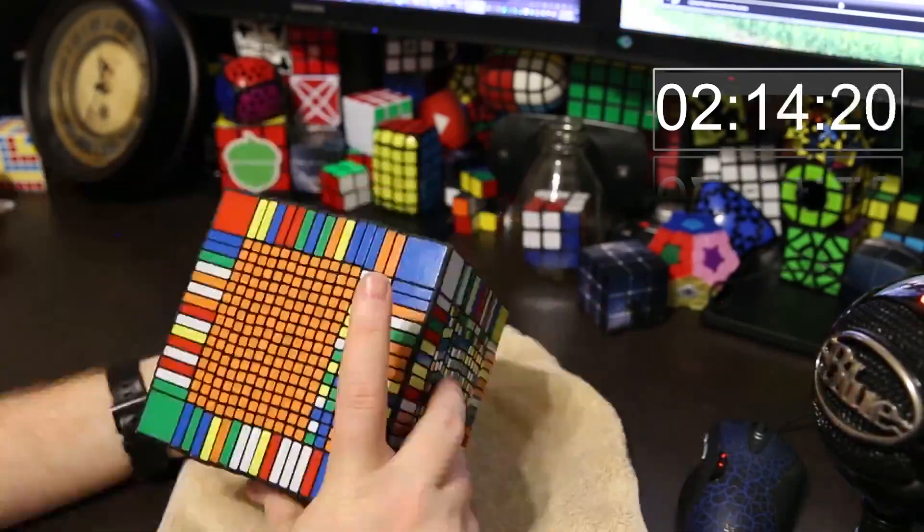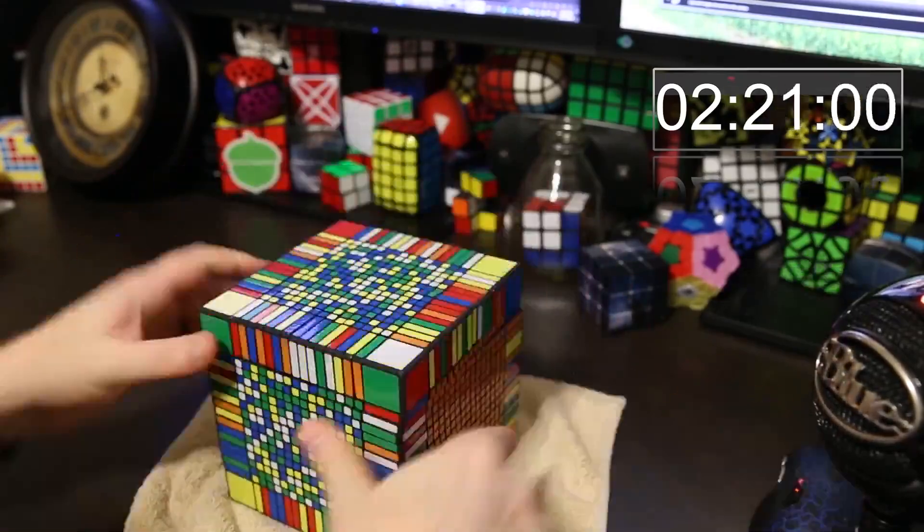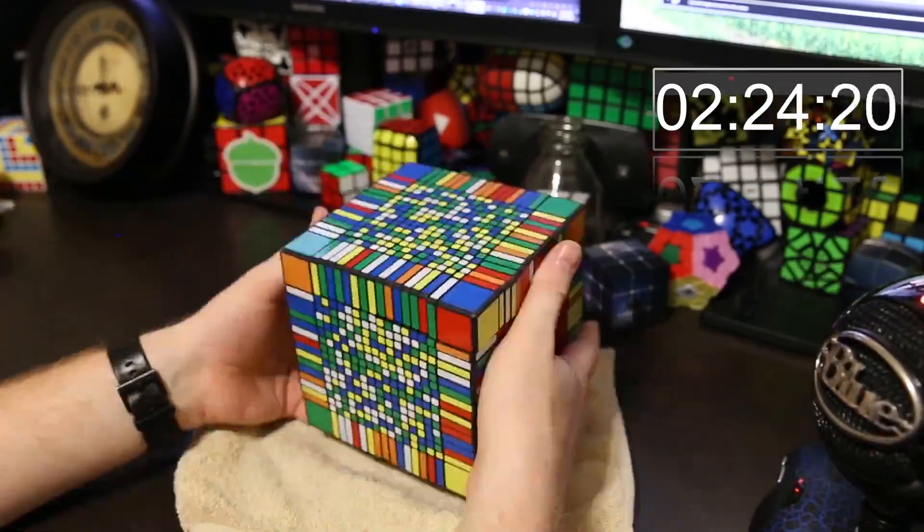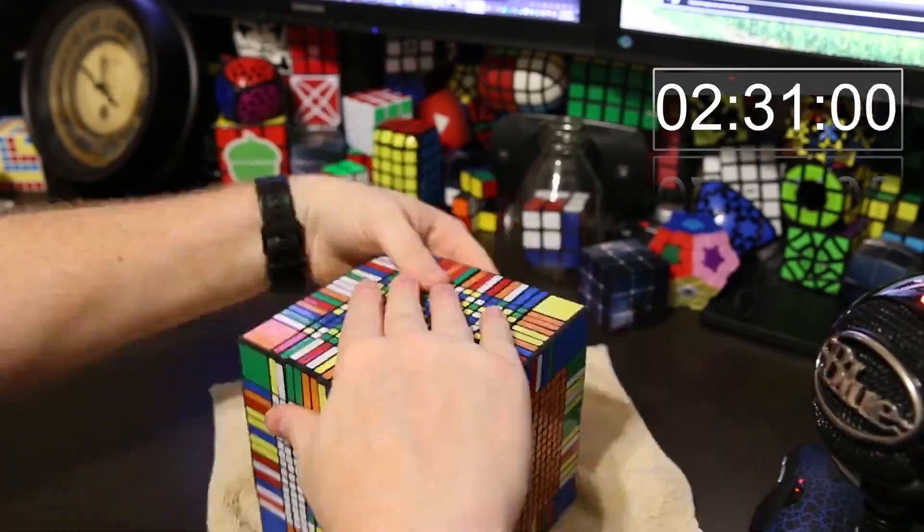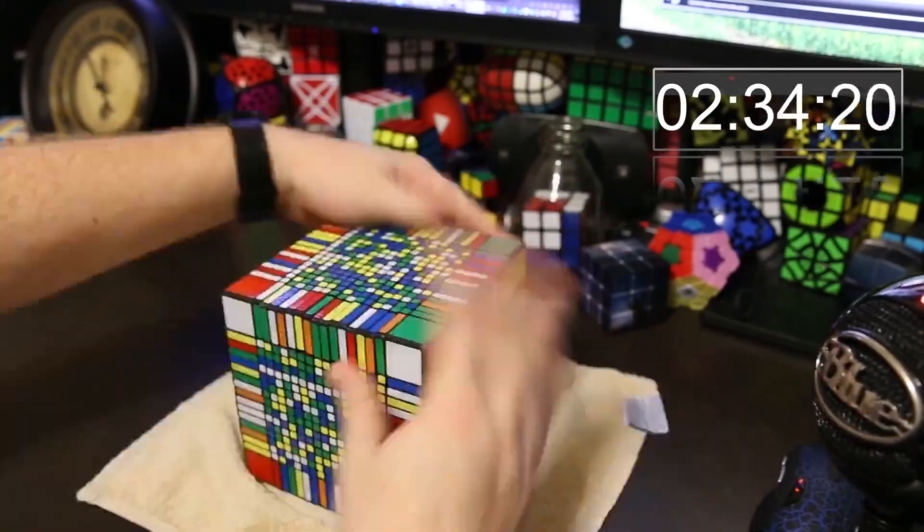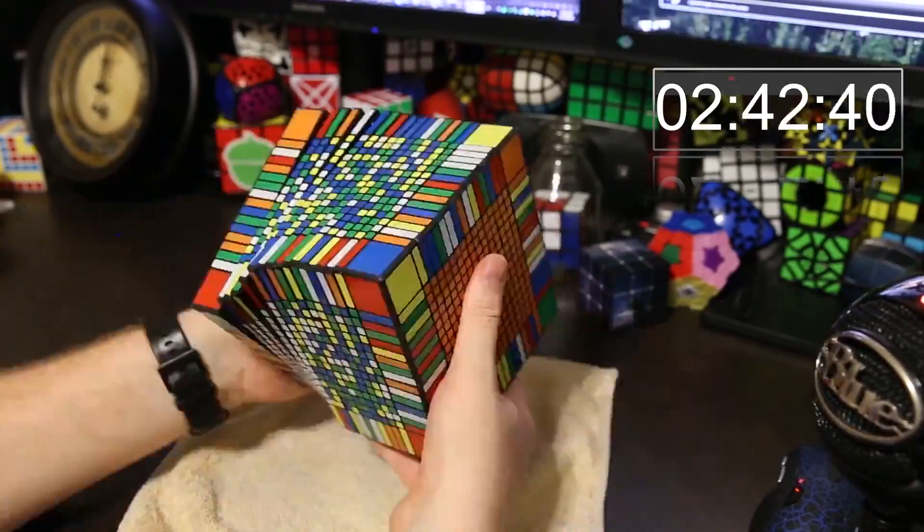But using the reduction method, it took me five days to solve this puzzle. The first day I solved the red center, the second day I solved the orange center, the opposite side of red is orange, and then I did the white center on that day. The third day I did the green center.